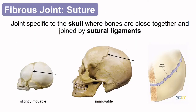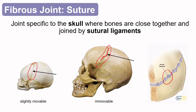We'll start with the suture, which is specific to the skull. Sutural ligaments bind these bones together, as seen in this illustration. In infants and juveniles, sutures remain slightly movable, allowing for growth and accommodating the birth canal. In an adult, the joint is fully immobile. The interdigitating bony parts between the two bones really keeps that mobility down.